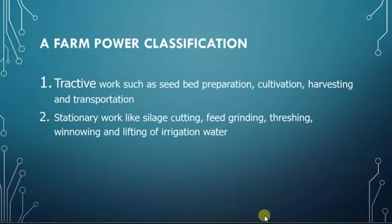As we mentioned before, we have two kinds of farm work: tractive work and stationary work. Tractive work is the kind of work done while the machine or the tractor is moving — if the work is done while the tractor moves from place to place, this is tractive work, such as seedbed preparation, cultivation, harvesting, transportation, and so on. Stationary work is the kind of work done while the tractor stays still at the same place — the tractor is not moving.